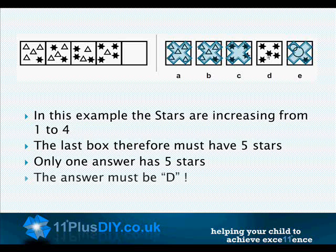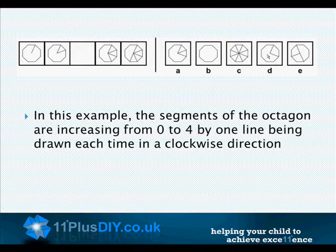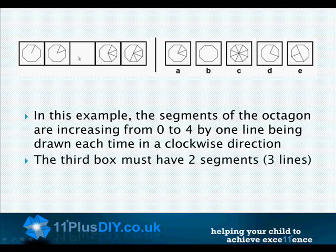In this example, the segments of the octagon are increasing from 0 to four, with one line being drawn each time in the clockwise direction. The third box must have two segments and three lines. Only one picture indicates this. The answer must be A.